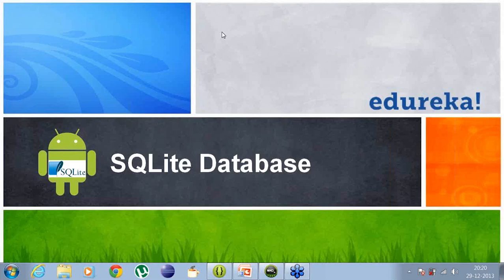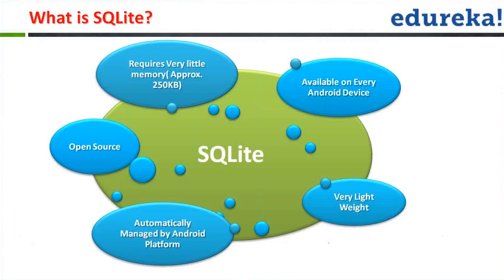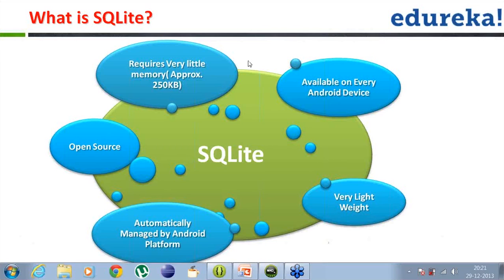So let's first of all talk about what exactly SQLite databases are. SQLite is actually a database which requires very little memory — around 250 KBs of memory in order to be housed by the device. It is available on every Android device, which has inbuilt support for SQLite databases. They are very lightweight and automatically managed by the Android platform — their creation, execution, and querying process is automatically handled.